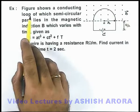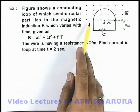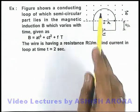In this example, this figure shows a conducting loop of which the semicircular part lies in the magnetic induction B. We can see this in outward direction.